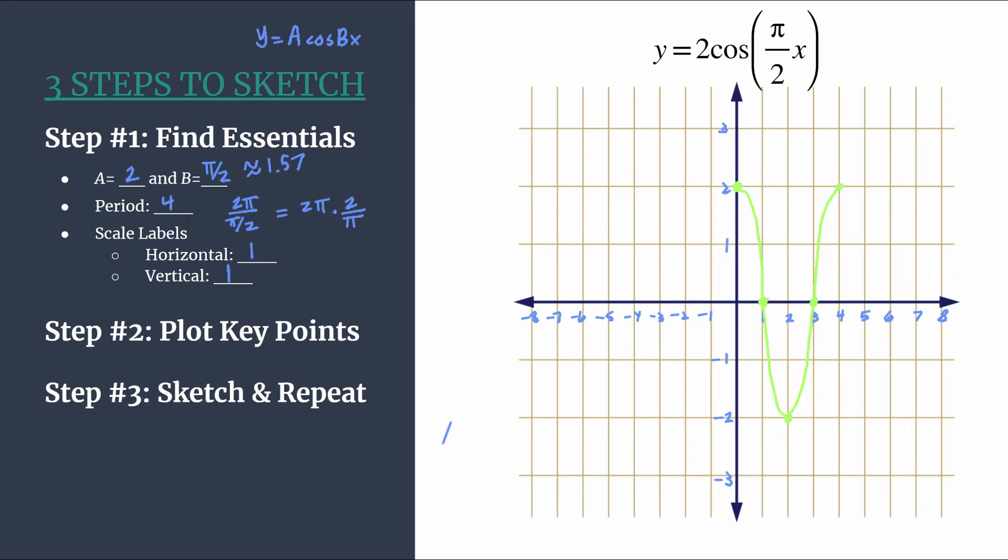So let's repeat a couple of cycles. So I'll show these in purple. Let's do another pattern, another repetition. We have a maximum, a 0, a minimum, a 0. And then we would repeat. So that's the first point in a new cycle. And we'll show that that continues on.